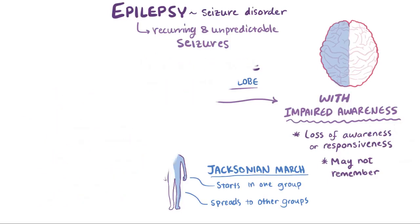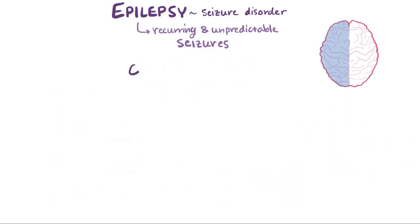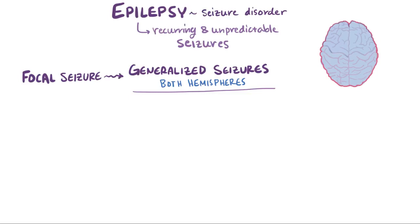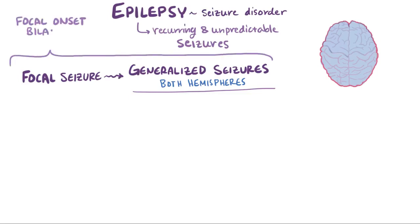In contrast to a focal seizure, a generalized seizure is where both hemispheres of the brain are affected. Sometimes a seizure will start out as a focal seizure and then quickly develop into a generalized seizure, and in those situations it's called a focal onset bilateral tonic-clonic seizure, because a focal seizure came before it and was the primary event.